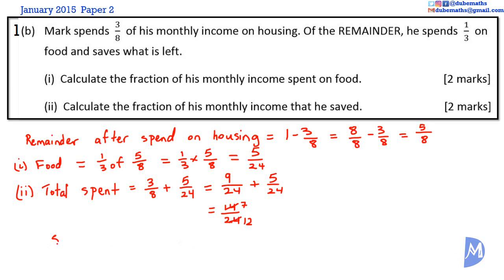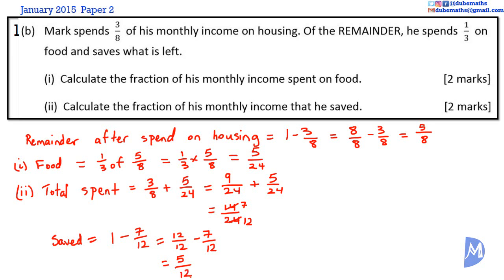The amount saved equals the total amount minus the amount spent. The total amount is 1, expressed as 12 over 12. So it's 12 over 12 minus 7 over 12. Since both fractions share the same denominator, we subtract the numerators: 12 minus 7 is 5. The answer is 5 over 12. I am Mr. Dube.